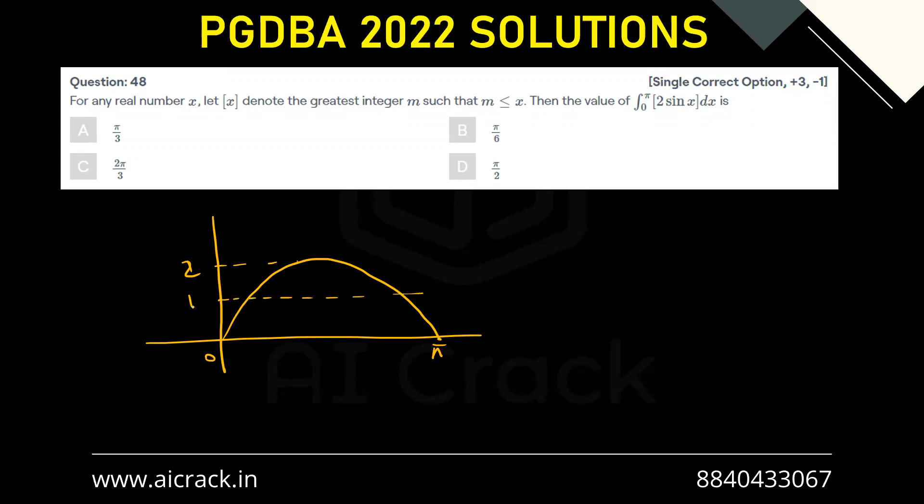And we also know that GIF function is discontinuous at integral values, so we have to take those values into consideration. This value is π by 2. At π by 2, 2 sin x is 2, and at π by 6 and 5π by 6, 2 sin x would be 1.